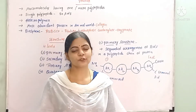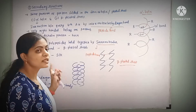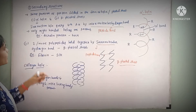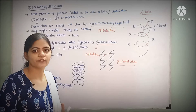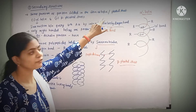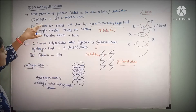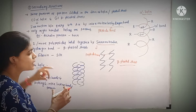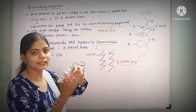Next is the secondary structure of proteins. The proteins are not always in the form of straight rod-like structures. Some portions of the proteins are folded in the form of a helix or beta-pleated sheets. In alpha helix, there is an interaction between every fourth amino acid, which causes a helical structure.